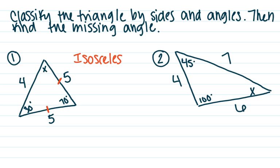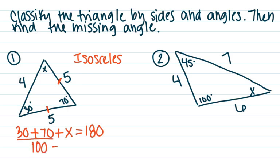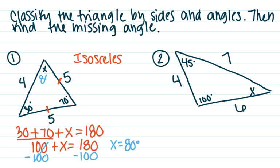I'm going to solve for x first, because depending on whether x is over 90, less than 90, or equal to 90, that will change what type of triangle I have. So I set up my equation: add all three angles together and set it equal to 180. Adding the two angles I know gives me 100 degrees, plus x equals 180. Solving that equation — doing the same thing to each side to undo what's happening — leaves x equal to 80 degrees. So all of my angles are less than 90 degrees.